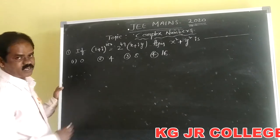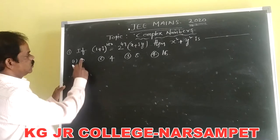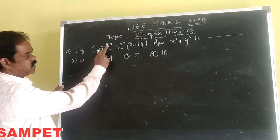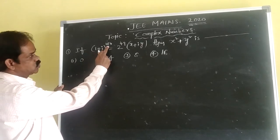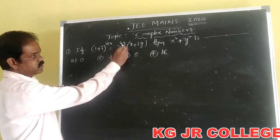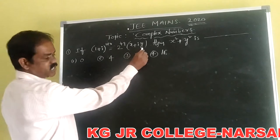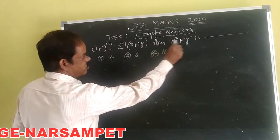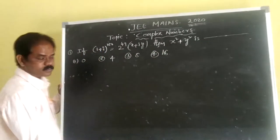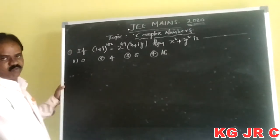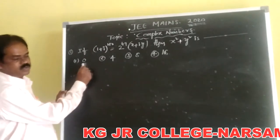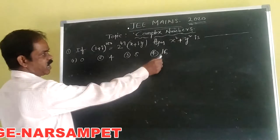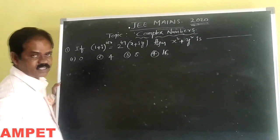First, we are creating one problem. If (1 + i) to the power of 100 is equal to 2 to the power of 48 times (x + iy), then the value of x squared plus y squared is equal to — with four options: first option is 0, second is 4, third is 8, and fourth is 68.